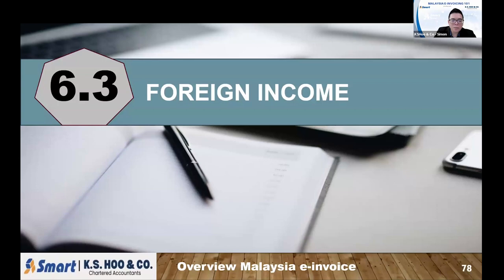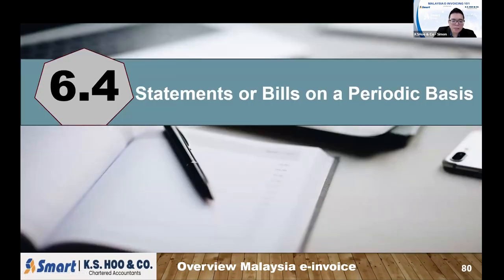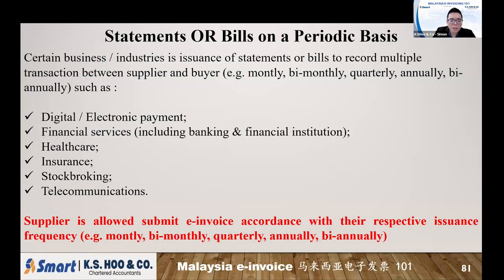We now move to the next topic: foreign income. Sometimes a company may receive foreign-source income from outside Malaysia. If this foreign-source income is transferred back to a Malaysian bank account, when it is captured in the Malaysian account, you need to issue a self-billed invoice to justify this foreign-source income. For statement or bill on a periodic basis — some companies issue invoices monthly, quarterly, annually, or bi-annually — the income tax guideline says you can follow your current invoice method to issue invoices to your customers. The only change is that the normal invoice will become an e-invoice.